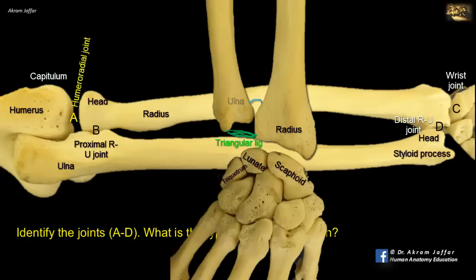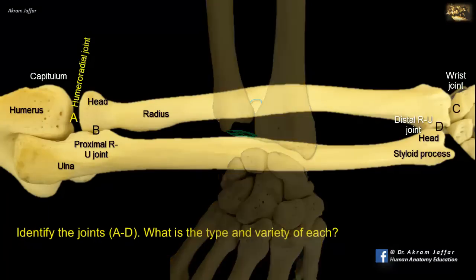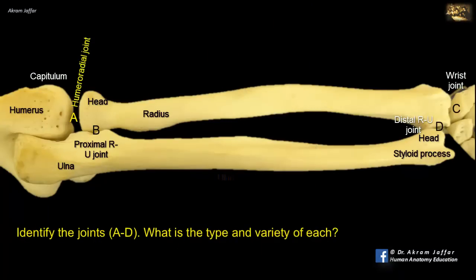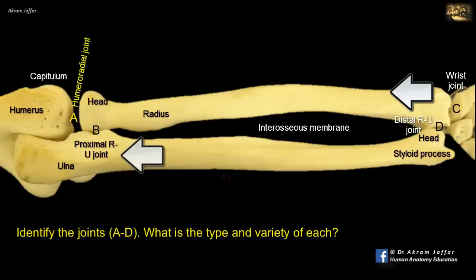But the ulna forms the elbow joint. That's why forces are transmitted from the hand directly into the radius. And then, from the radius, they are transmitted by the interosseous membrane lying between the two bones to the ulna, to be transmitted from the proximal part of the ulna to the humerus.